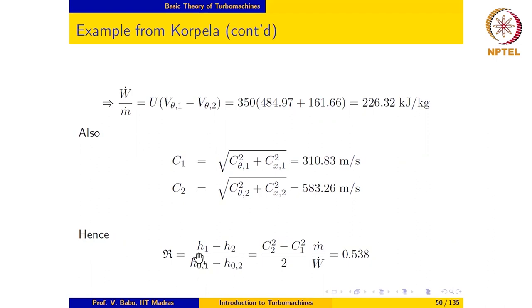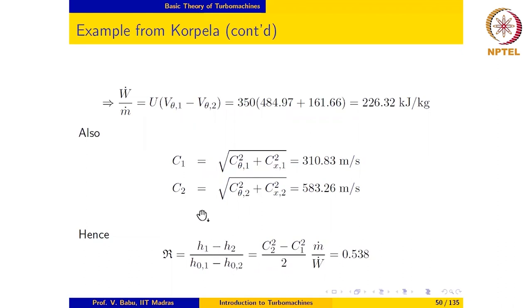The degree of reaction is defined as (h1 minus h2) divided by (h01 minus h02), where the denominator equals the specific power output. The quantity in the numerator may be evaluated as (C2² minus C1²) divided by 2, since h plus C²/2 is constant for an axial machine. Substituting the numbers, we get the degree of reaction to be 0.538.